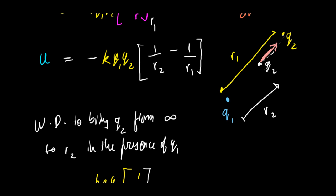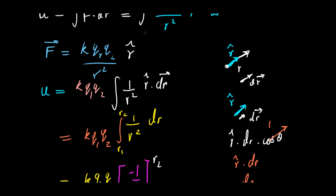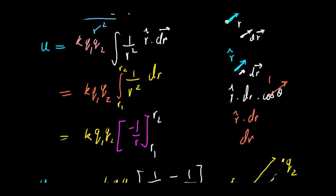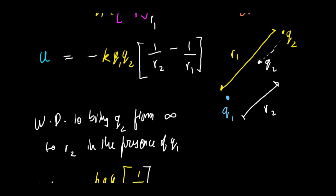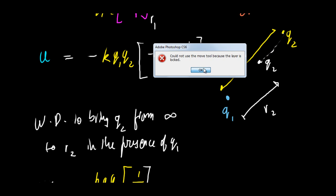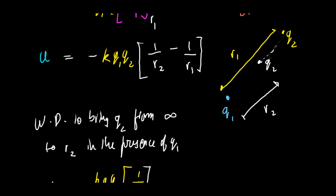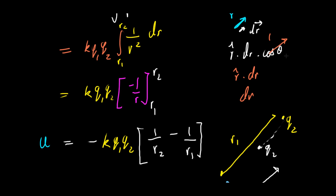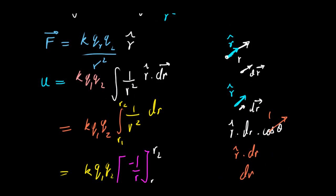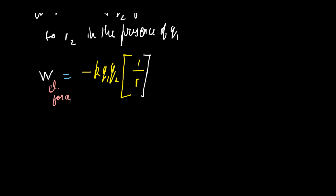The electrostatic force applies force in one direction, but q2 is displaced in the opposite direction. So in F dot dr = F times dr times cosine of theta, the angle between F and dr is 180 degrees. Cosine of 180 degrees is negative one, so the dot product gives a negative result — confirming the electrostatic force does negative work.